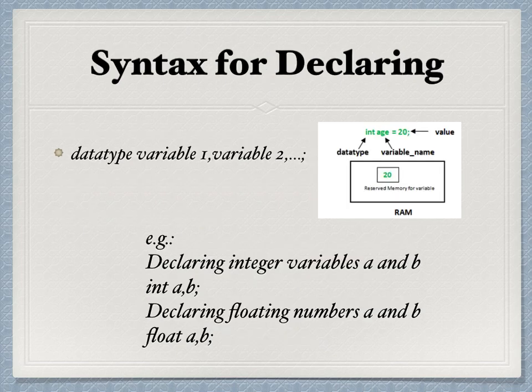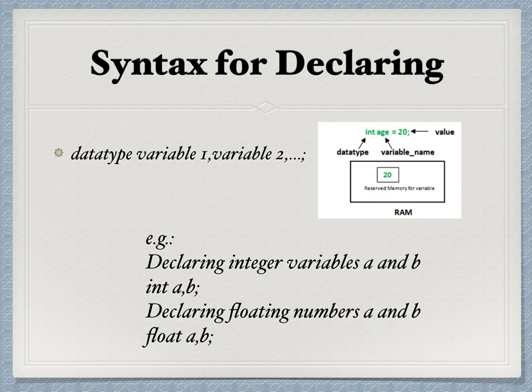The step which we use to allocate memory is called declaration. The syntax for declaring — that is the rule you have to follow for declaring a variable — is shown on the screen. First you have to specify the data type and then the name of the variable. If you have multiple variables you can separate them using a comma, and every statement in the program should be ended with a semicolon.